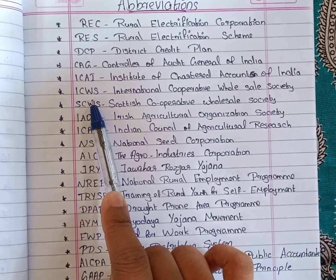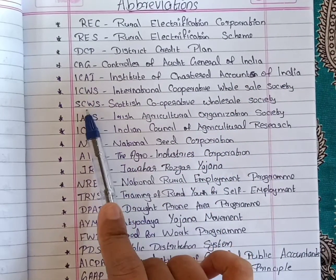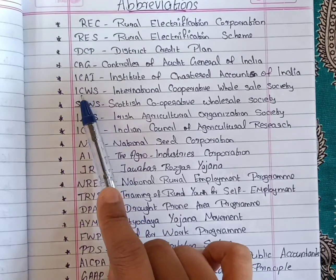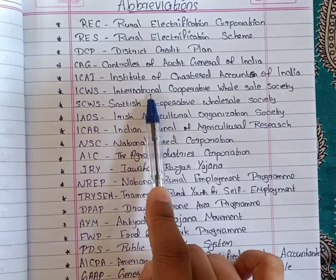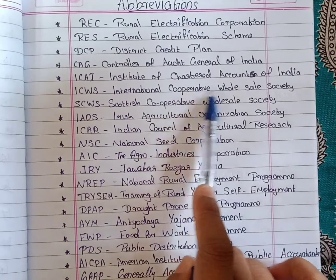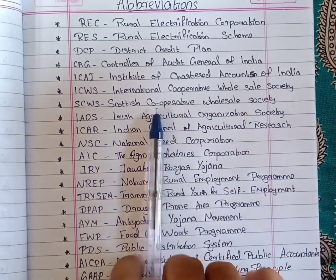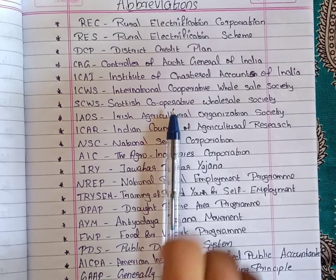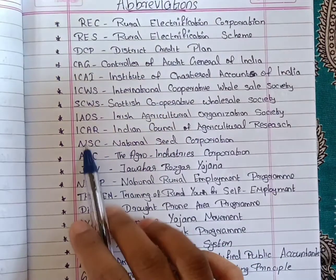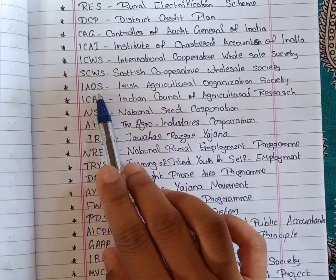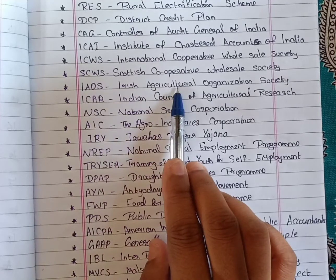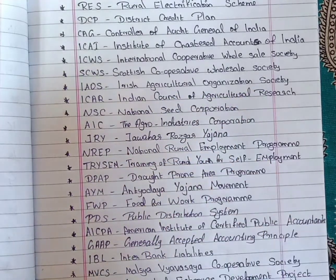Next, ICWS — International Cooperative Wholesale Society. SCWS — Scottish Cooperative Wholesale Society. Next, IAOS — the Irish Agricultural Organization Society.